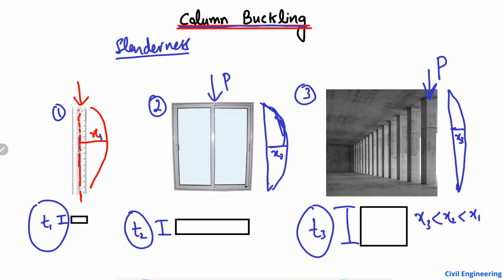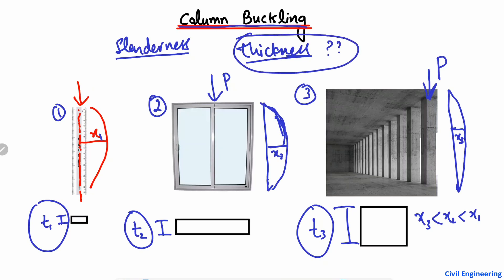But keep in mind: is it only the thickness that determines buckling? No. The thickness is not the only parameter that explains the buckling of a column or any material. We saw that thickness plays a role, but there are also other parameters that define the buckling or lateral deformation of any object.